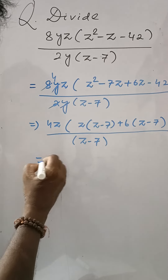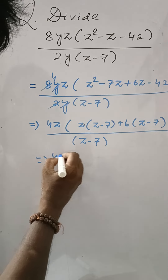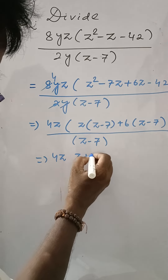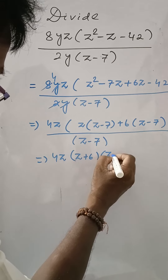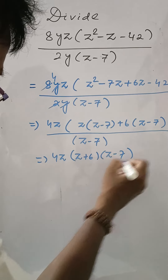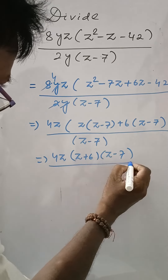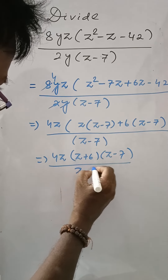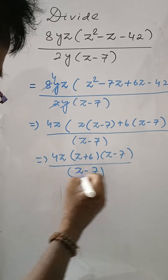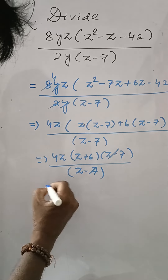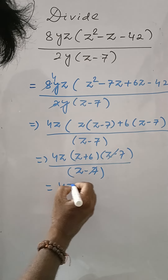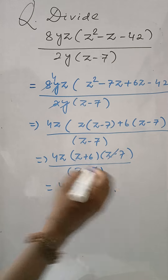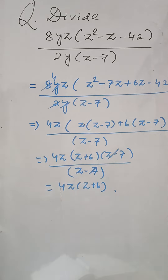Now this is 4Z, (Z + 6) into (Z - 7), whole divided by (Z - 7). So these are cancelled. 4Z into (Z + 6) is your answer.